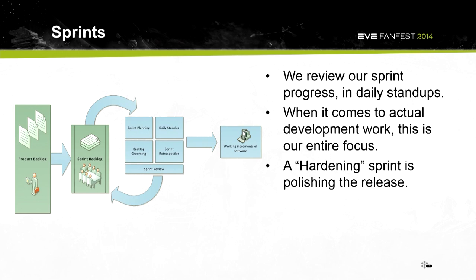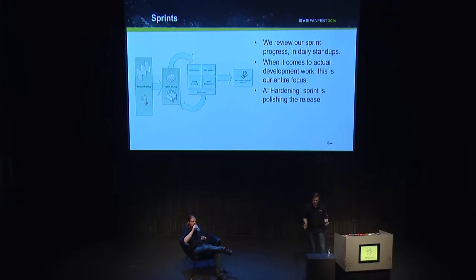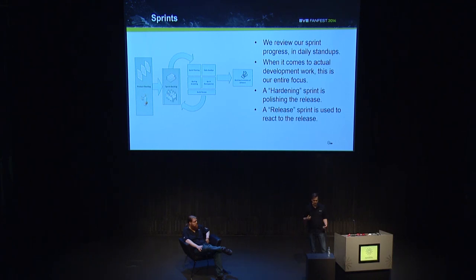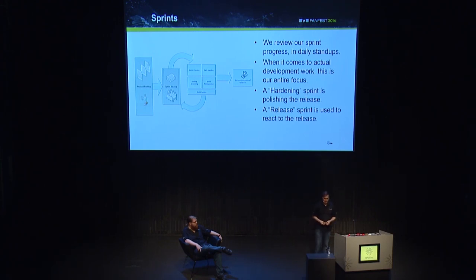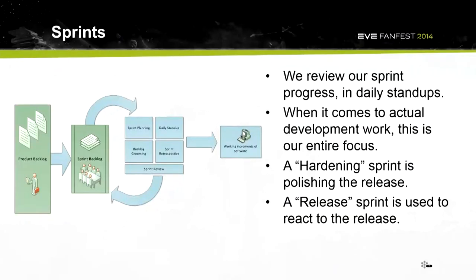We have a few special sprints. The hardening sprint has no committed work — it's solely for polishing up the release, fixing all known defects, and reacting to feedback such as design choices players have told us about. We also have a release sprint for monitoring a release: directly after we ship, there's still no committed new work — we just want to see what players are saying they need from the release and what kind of defects come out of it.